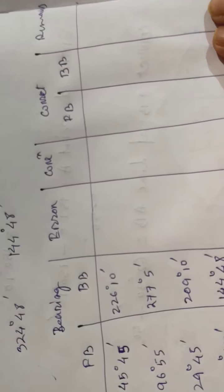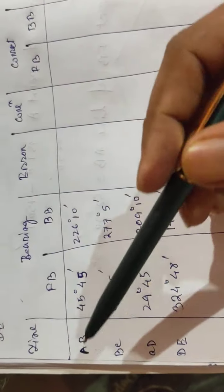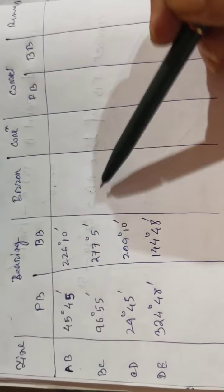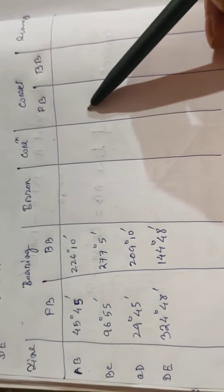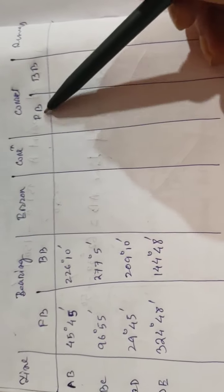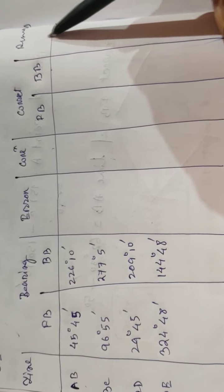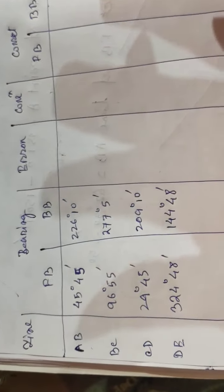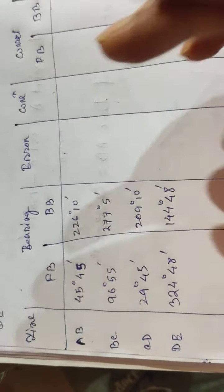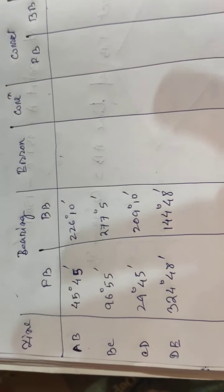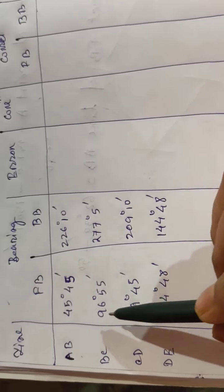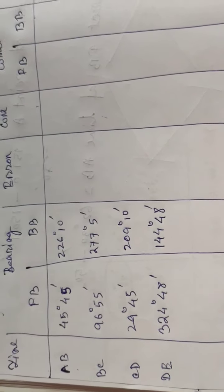Just like the earlier problem, we need to make this table: these are the lines, these are the observed bearings, we need to find out the error of each line, apply the correction, find out the corrected fore bearing and back bearing, and there is a remarks column. The first step is to find the line or lines which has a perfect difference of 180 degrees between the fore bearing and back bearing.